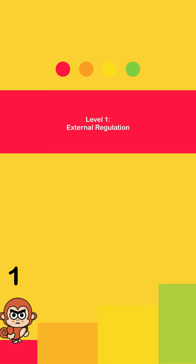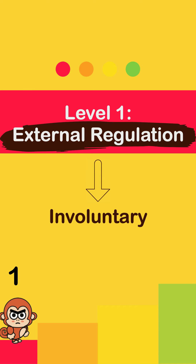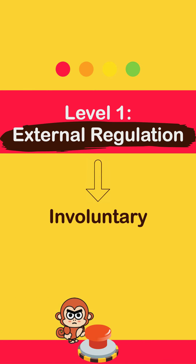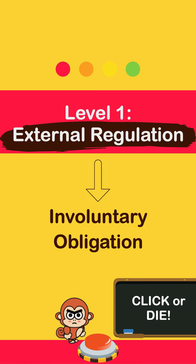The first level is called external regulation, and is an involuntary type of motivation where we take on a particular behavior because we have to — it is an obligation.